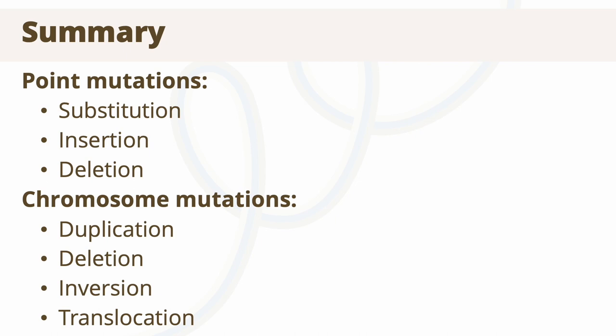In summary, this video covered two different types of mutations that can arise: point mutations and chromosome mutations. The three types of point mutations include substitution, insertion, and deletion. Chromosome mutations, on the other hand, happen in four different ways: duplication, deletion, inversion, and translocation. By understanding the different types of mutations that can arise throughout the complex processes of DNA replication and function, we can also understand their potential effects on protein function.